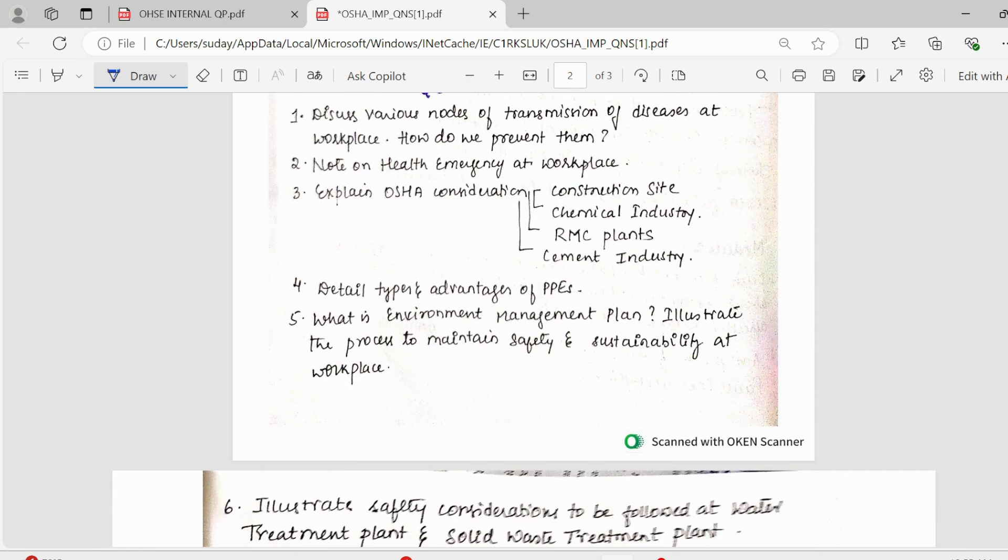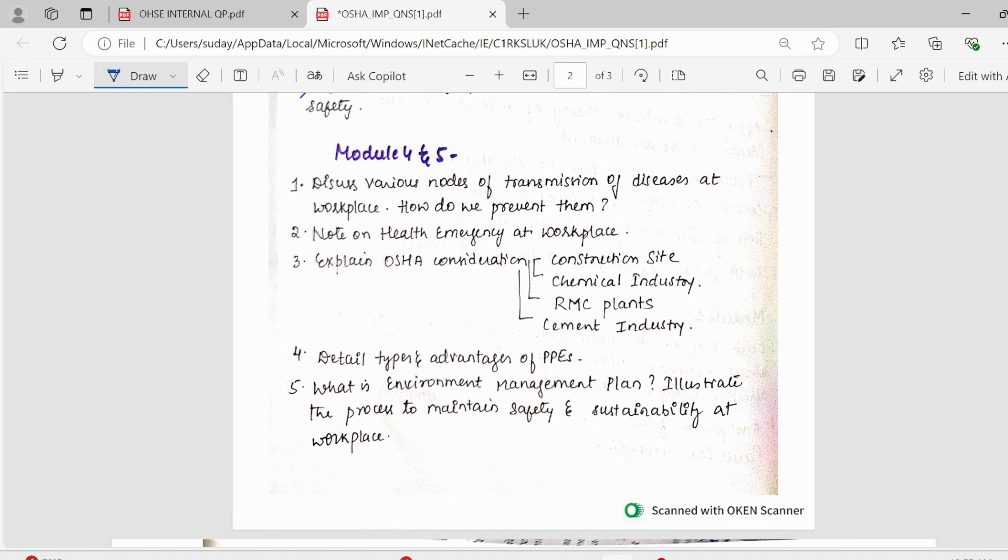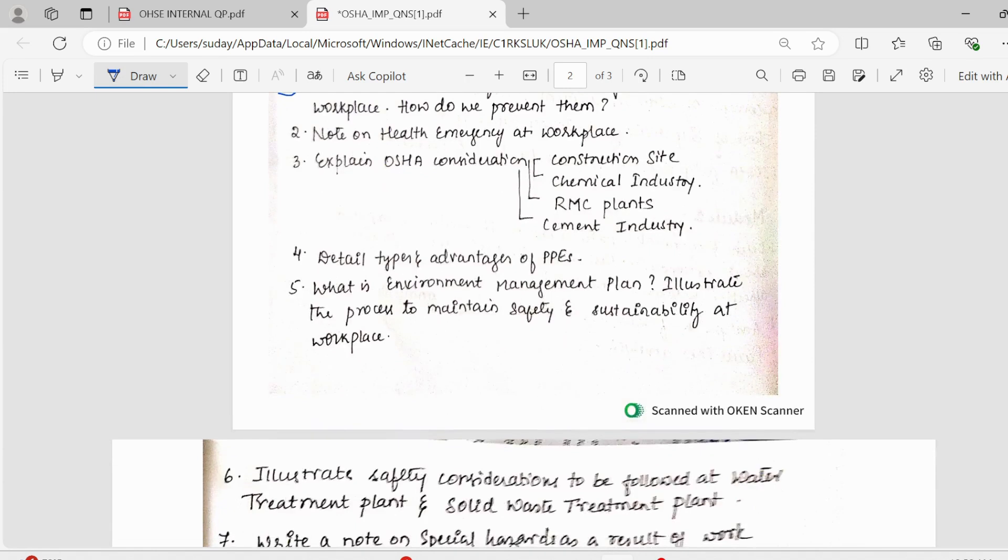Moving on to fourth and fifth module, I clubbed these two because there were standard questions. Make sure you cover all these problems. Firstly, we have various modes of transmission of diseases at workplace. How do we prevent them? Then, we have note on health emergency at workplace. Then, explain OSHA consideration firstly for construction site, chemical industry, RCC plants, and cement industry.